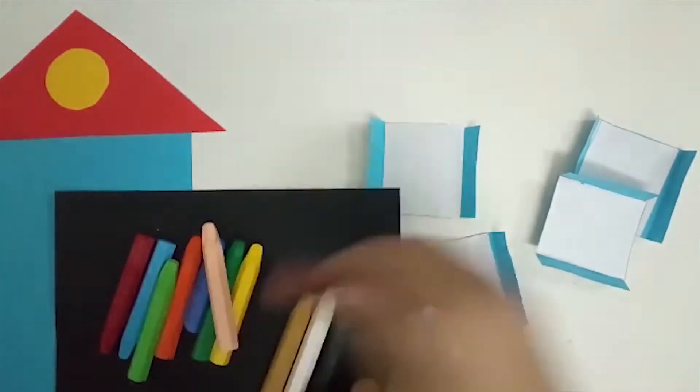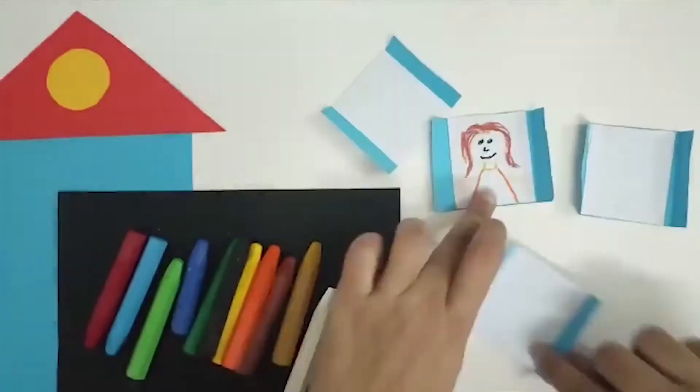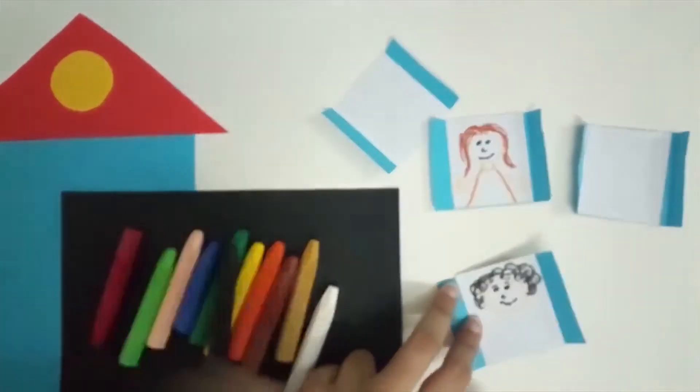Now draw your family members on these squares with your favorite colored crayons and paste these characters as shown.